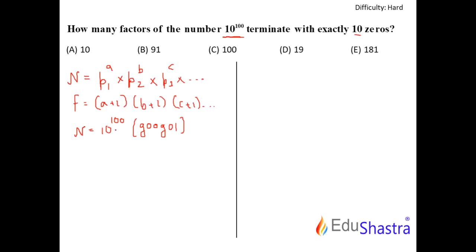So for this number, I need to figure out that I need exactly 10 zeros. We have a concept whereby if I factor out 10 raised to 10 from this number, for example, if I reinterpret this number as 10 raised to 10 times 10 raised to 90. So essentially, this is nothing but the 10 zeros that I need for myself.